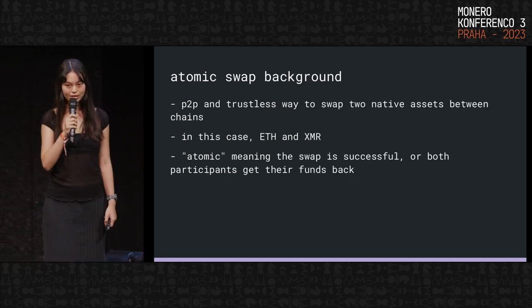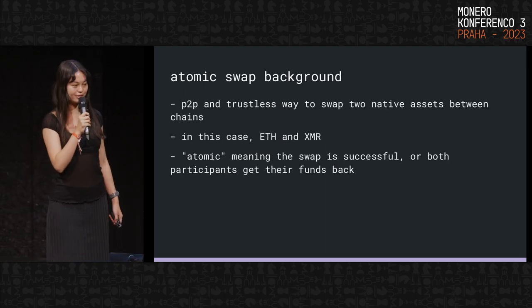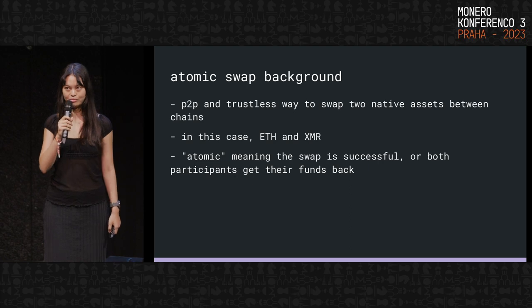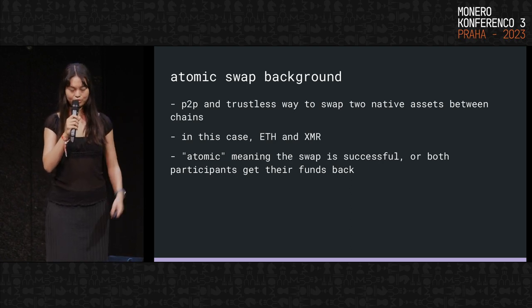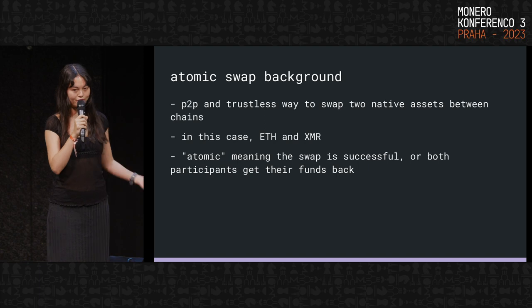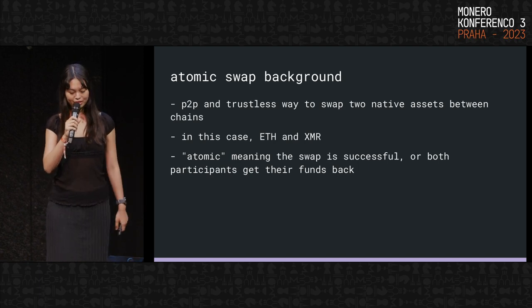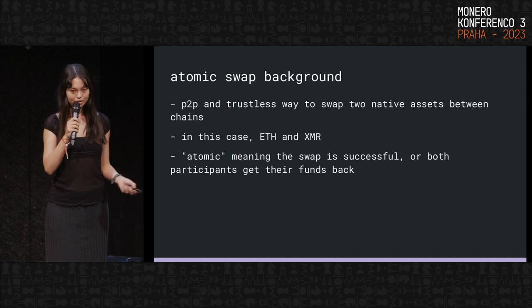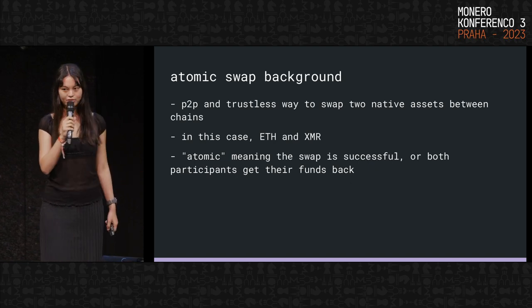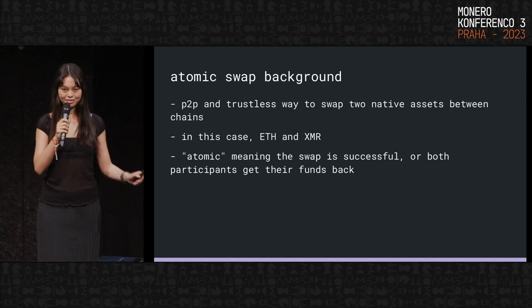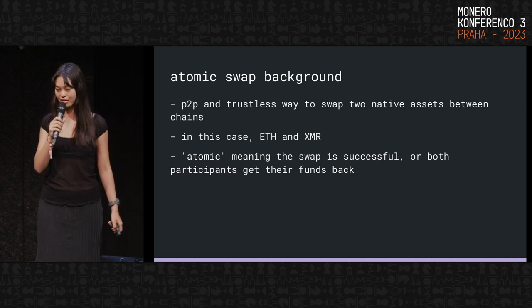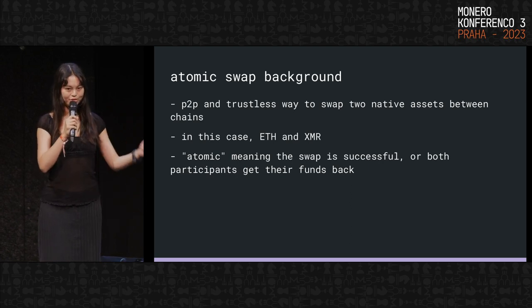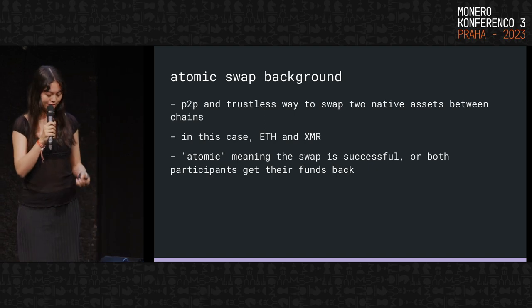Just a little bit of background on atomic swaps. Basically it's a P2P and trustless way to swap two native assets between different chains. The ones that are implemented in this case are ETH and Monero. Atomic means that either the swap is successful — so both parties receive their respective funds — or they both get their funds back.